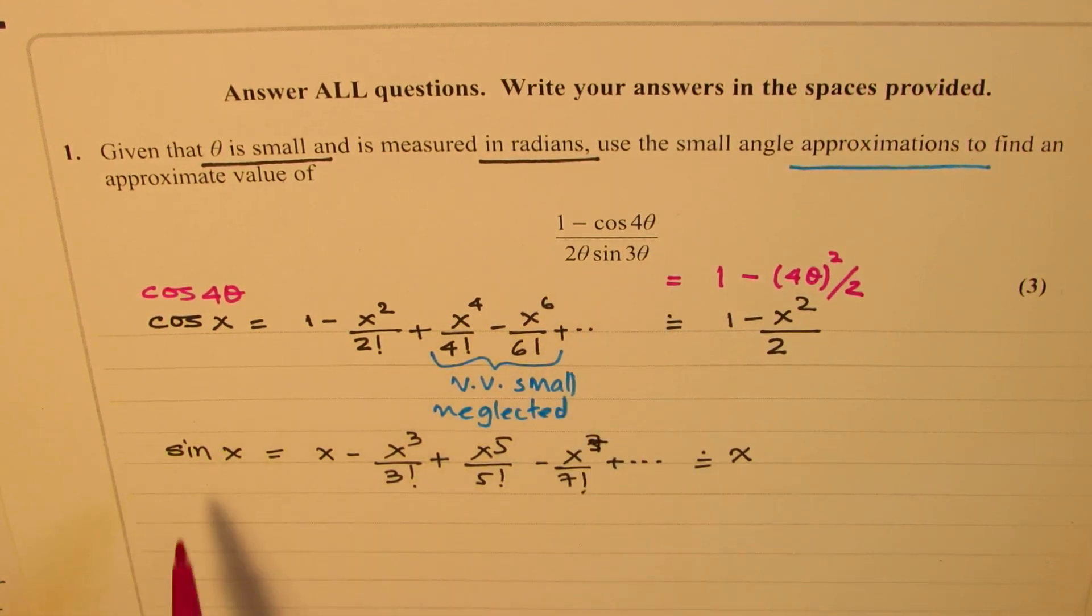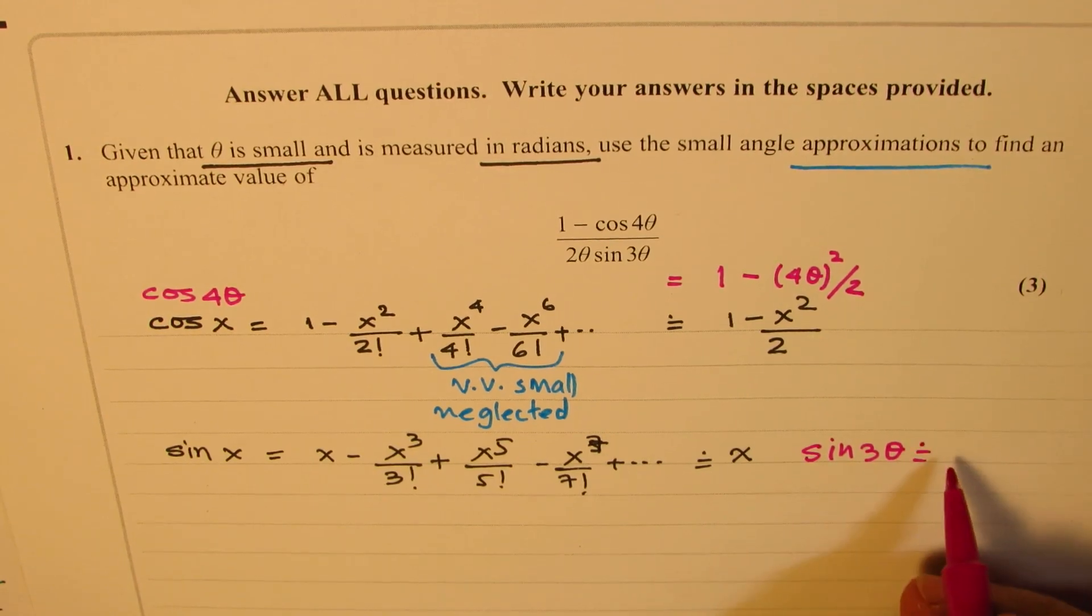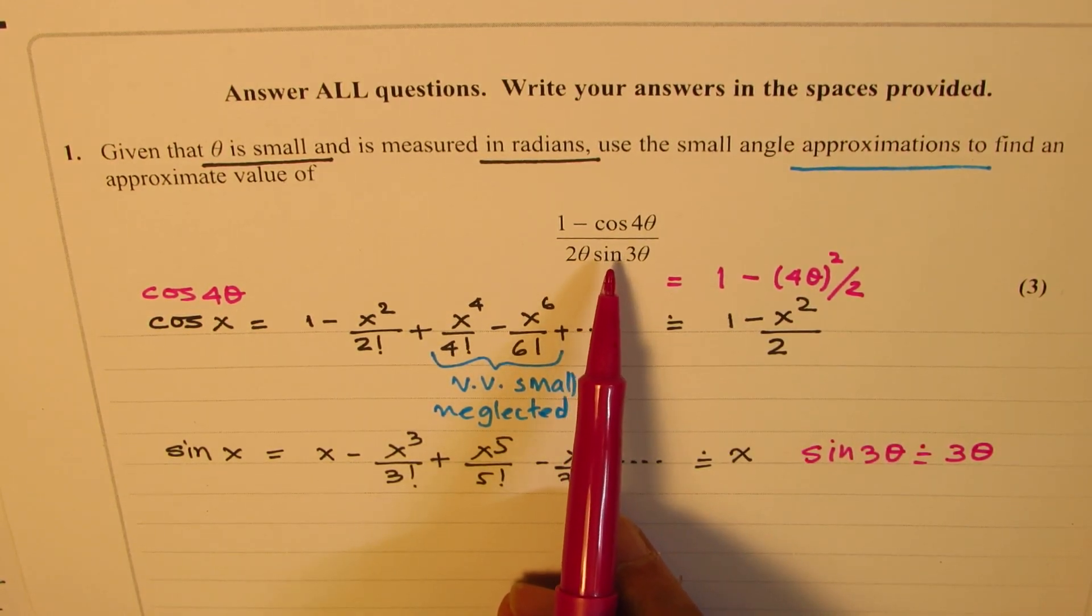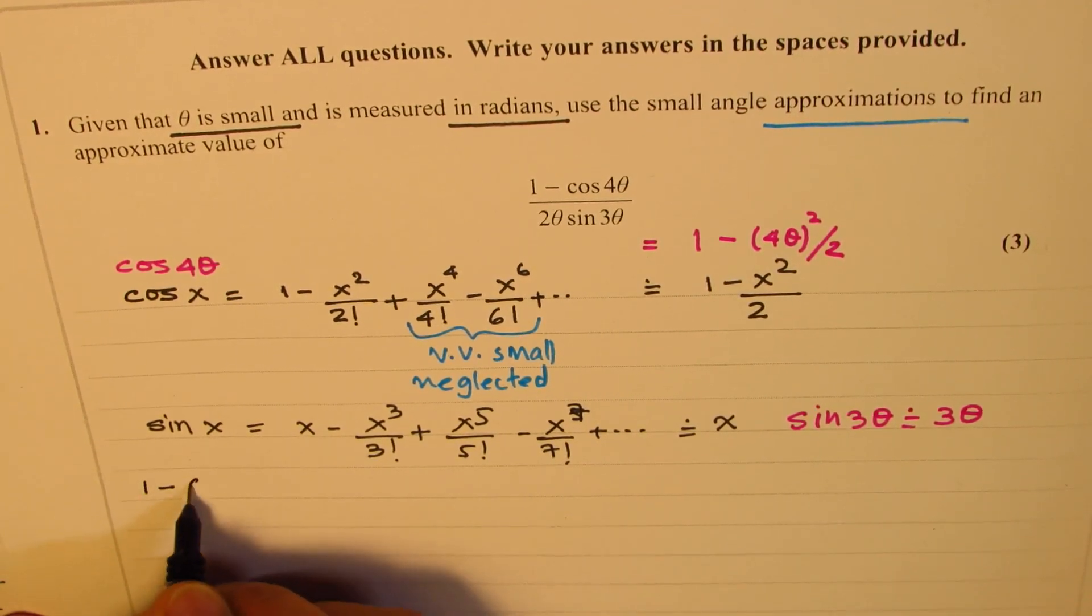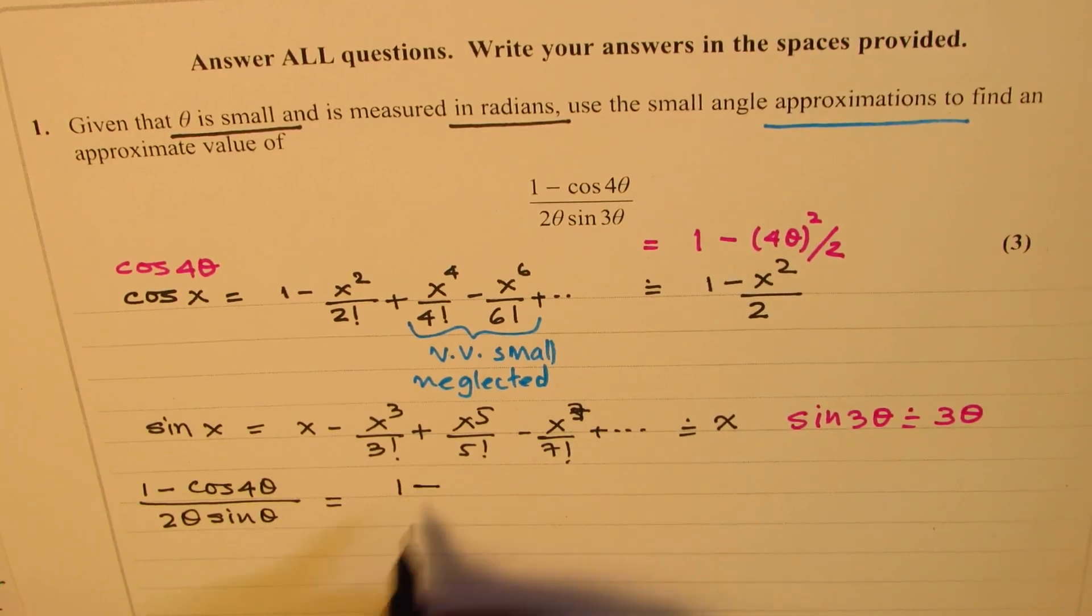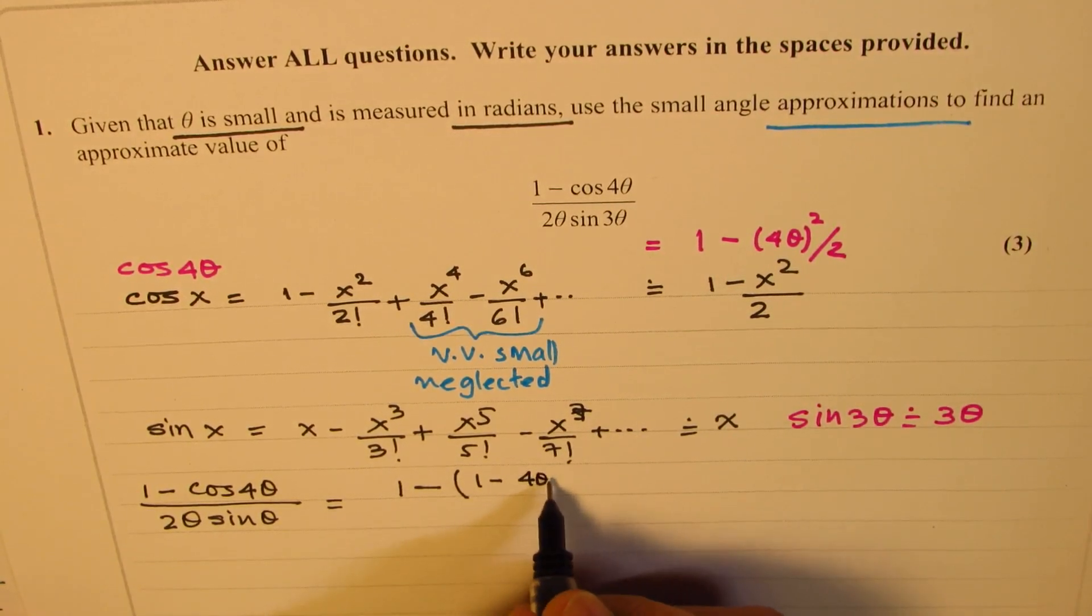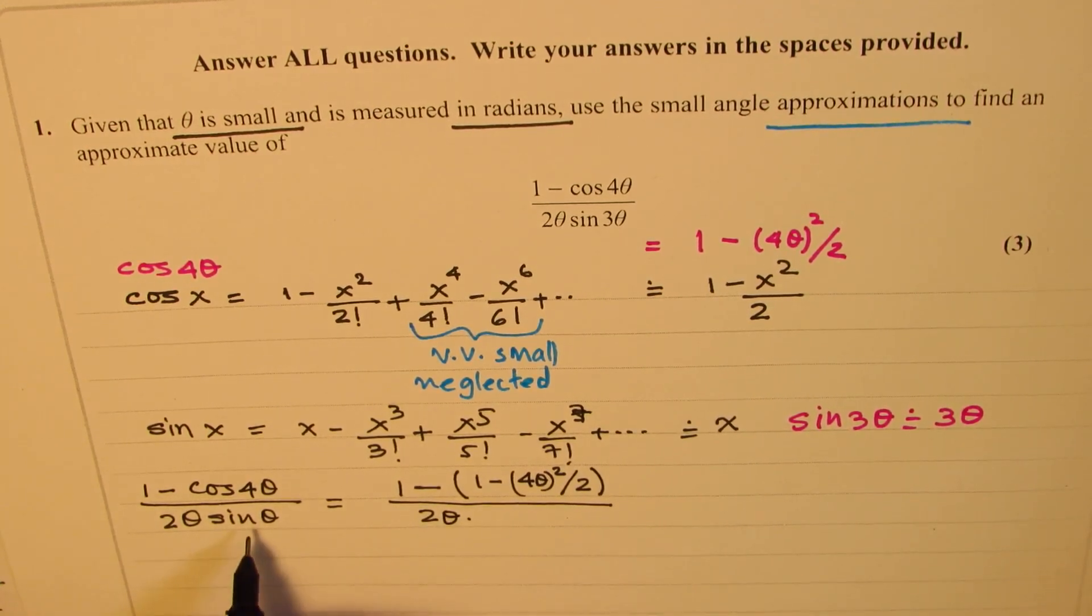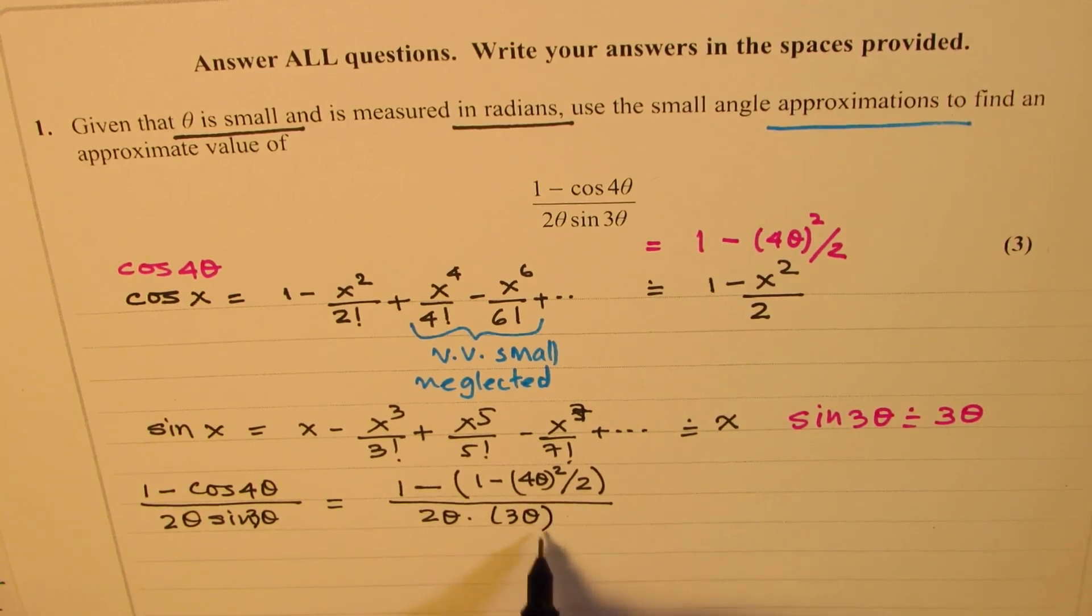Now, when it is sin of 3 theta, x becomes 3 theta. So sin of 3 theta, since x is 3 theta, will be approximately equal to 3 theta. So we need to replace these values in the given expression and then simplify. So let's do that. So we can now write down the expression as, we can write 1 minus cos 4 theta divided by 2 theta sin 3 theta as equal to 1 minus. So instead of cos 4 theta, we are going to write 1 minus 4 theta whole squared divided by 2. And the denominator, we have 2 theta times sin theta will be written as sin 3 theta. Sin 3 theta will be written as 3 theta. Is that clear to you?